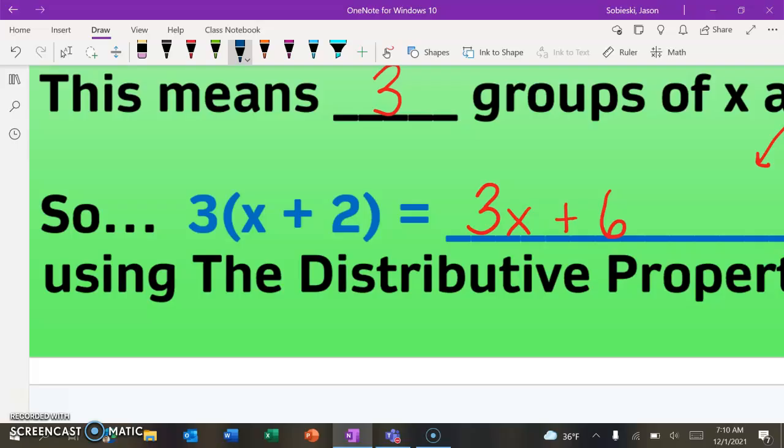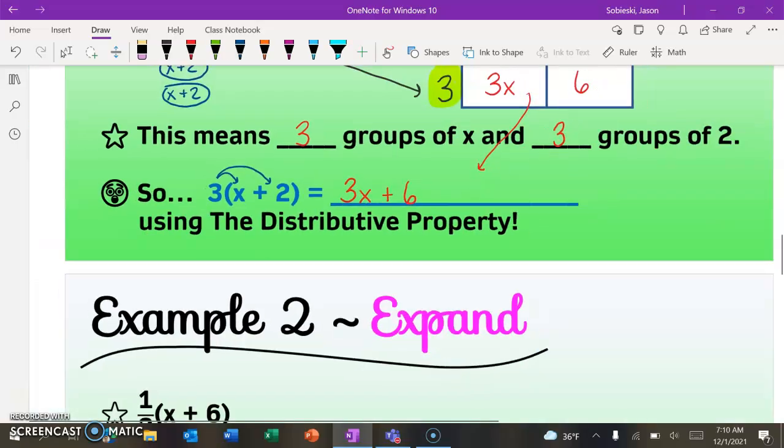So let's check and see if we did it. So again, the rectangle method is great. Sometimes you'll see it with these arrows though. So we just need to make sure we took everything. So the x and the two, everything inside the parentheses and multiplied it by three, which we did. So that is good.